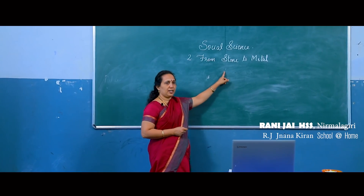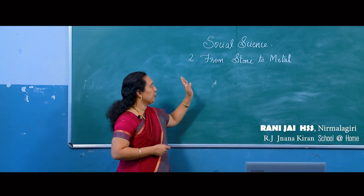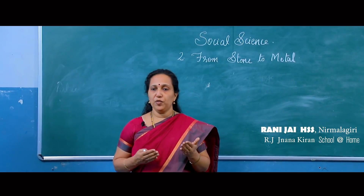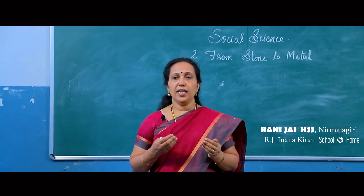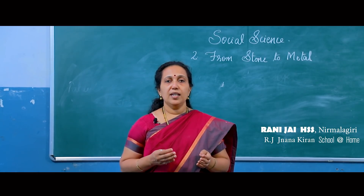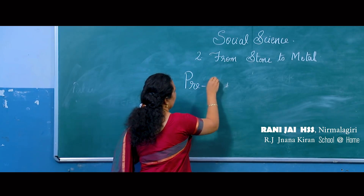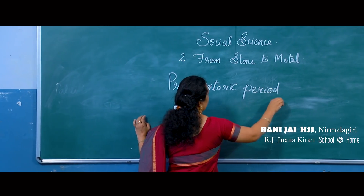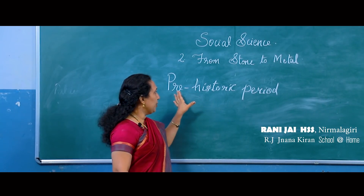Today we can discuss our second chapter: From Stone to Metal. In this chapter, we are going to learn about the life of man from the Stone Age to the Metal Age. Many many years ago, human beings lived in forests. They wandered here and there. They lived in caves. They hunted animals. They ate raw fruits and vegetables. At that time they didn't know how to read and write; they didn't know alphabets. This period is known as the prehistoric period — the period before the formation of the art of writing.